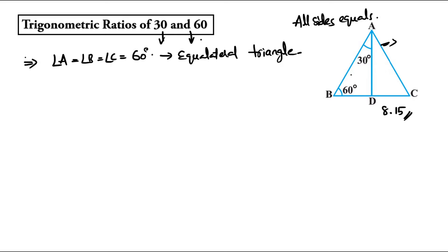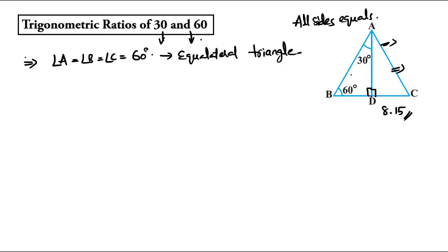If we take this equilateral triangle and draw a perpendicular AD, it will divide the triangle into two right angle triangles. So the first right angle triangle is triangle ABD, and the other right angle triangle formed is triangle ACD.